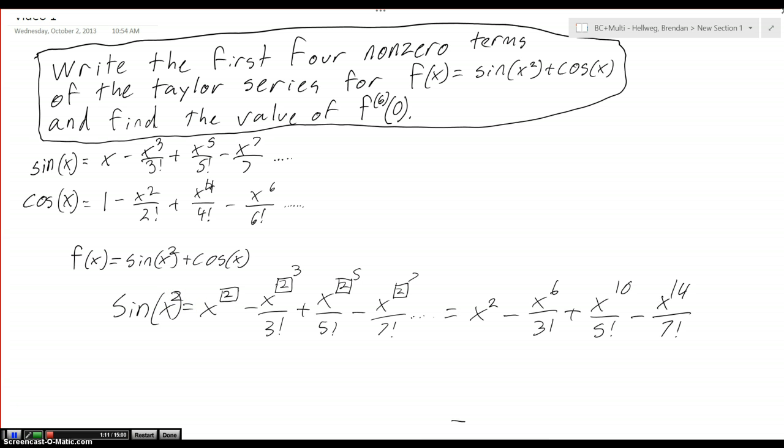If we want to simplify that, it's just going to look like x squared minus x to the sixth over 3 factorial plus x to the tenth over 5 factorial. You get the idea.